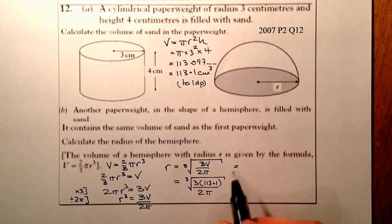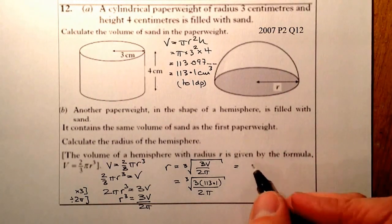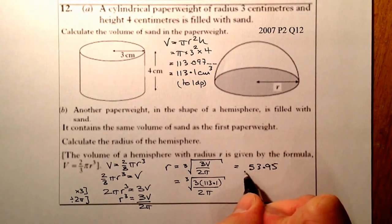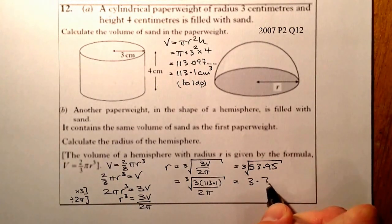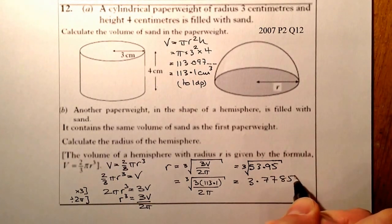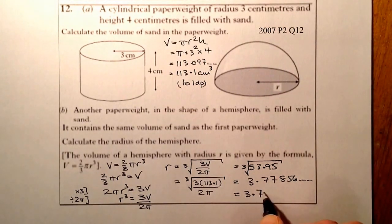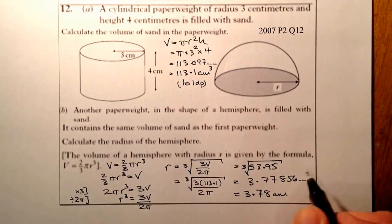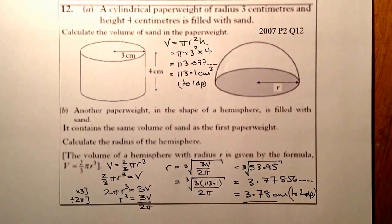Put that into the calculator: 3 × 113.1 all divided by 2 divided by π, and that's going to give me 53.95. I've still got to take the cubed root of that. Taking the cubed root, we'll come up with 3.77856. If I round that to two decimal places, that's 3.78 centimeters to two decimal places. That's the final answer.